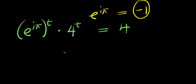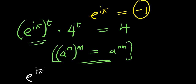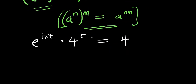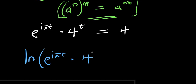Now, using the power rule — (a to the n) to the m equals a to the n times m — I apply this here, so I have e to the power of i times pi times t, multiplied by 4 to the power of t. Next I take the natural log of both sides: natural log of (e to the power of i·pi·t times 4 to the power of t) equals natural log of 4.